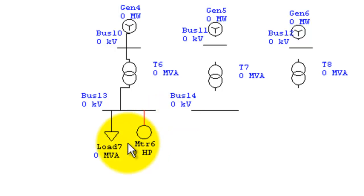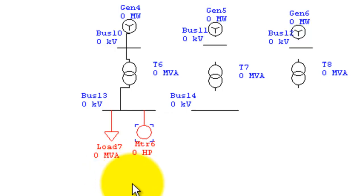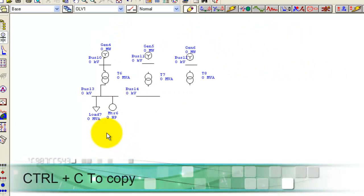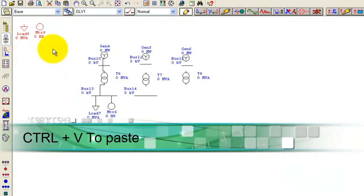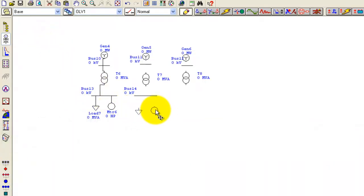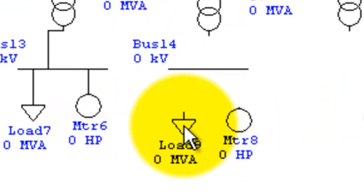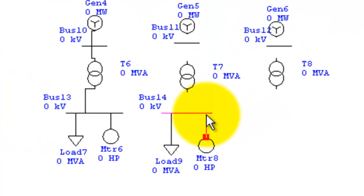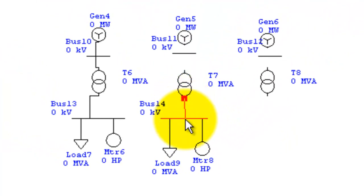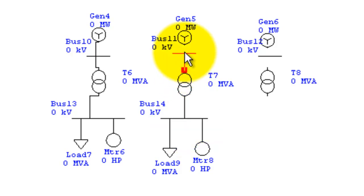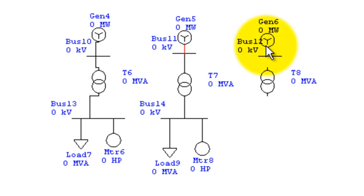Here is a little tip: if you want to replicate components, select them, press Ctrl+C to copy and then Ctrl+V to paste — they will get replicated. Drag them towards bus 14 and connect them to the specific bus. Connect transformer 7 to bus 11, then generate the bus. Similarly, we will do all the same process.